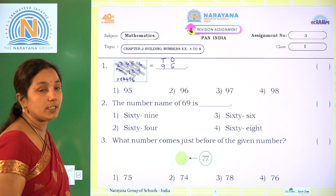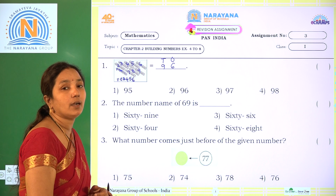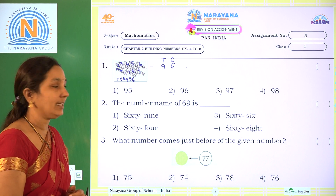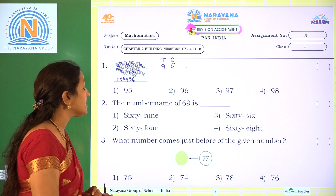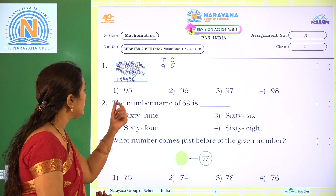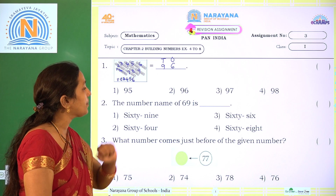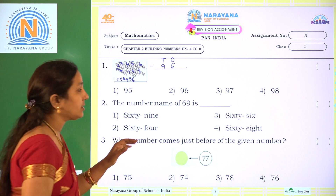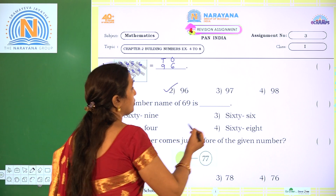6 is the ones place. So what do we get? 96. The correct option is option 2: 96.